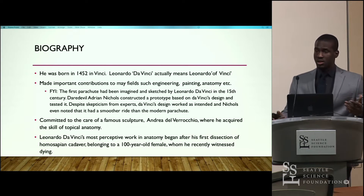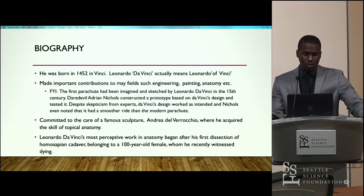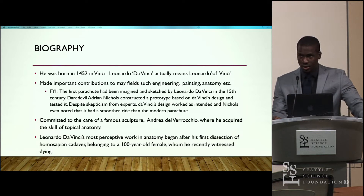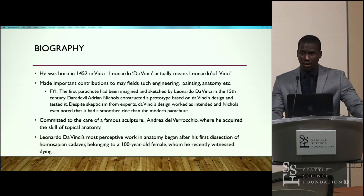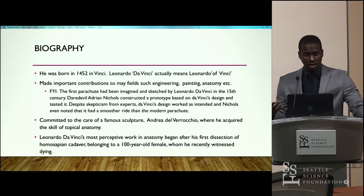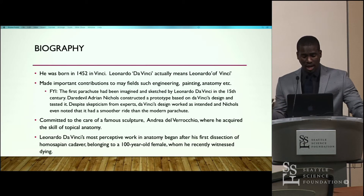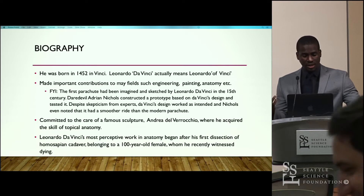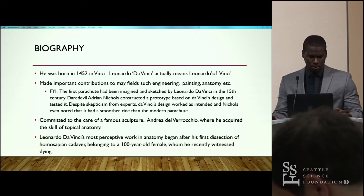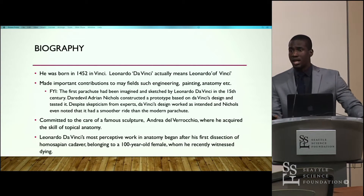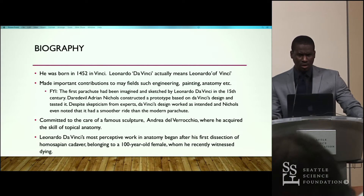At a young age, Leonardo da Vinci was committed to the charge of a famous sculptor whose name was Andrea del Verrocchio, at which time he acquired the skill of topographical anatomy because he was taken under his wings. Learning this skill made Leonardo da Vinci better at presenting or doing anatomical studies. The keen eye he developed and the attention to detail made his work far superior to that of his contemporaries at the time.